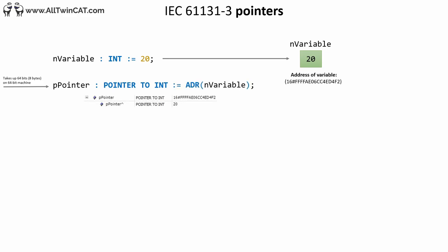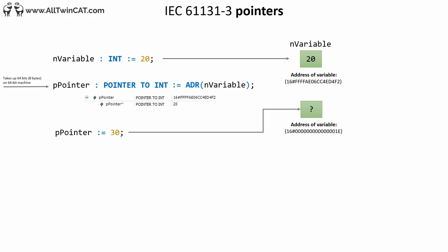To assign an address to the pointer so that it points to a variable, use the address operator. If you want to change the value of the variable the pointer is pointing to, you might think the obvious way is to simply assign a new integer value to the pointer. But what you are actually doing is changing the address of the pointer so that it points to some other memory location — in this case, just some weird place in the computer's memory. This is not what we want to do.